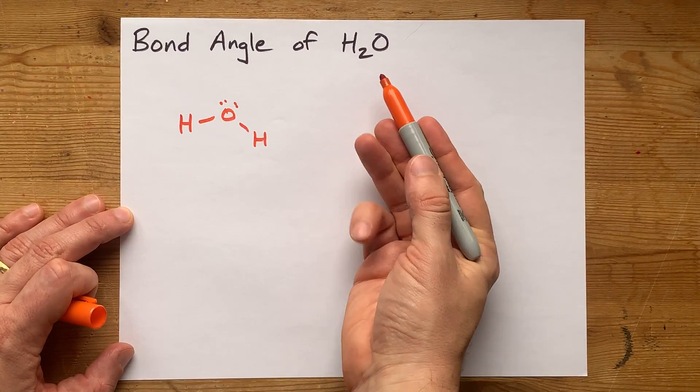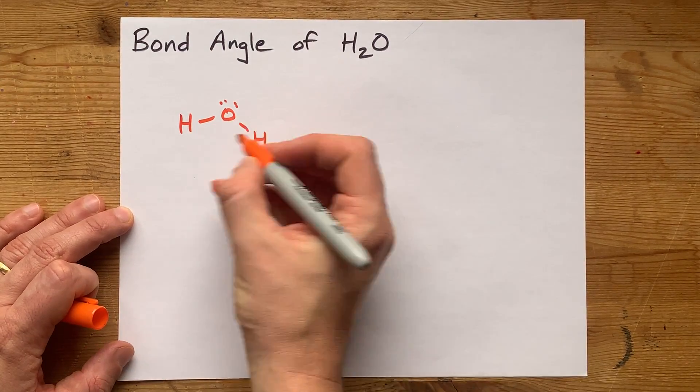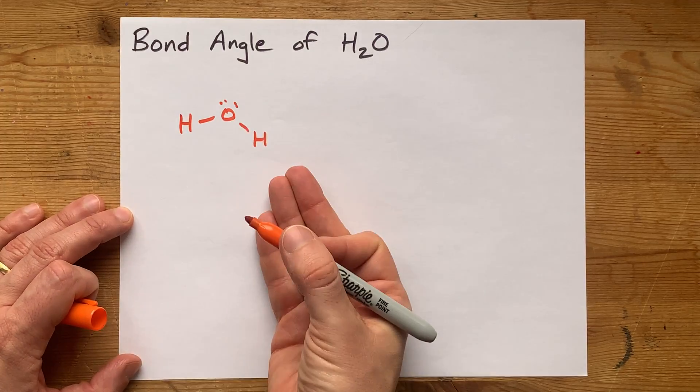What is the bond angle in H2O? First, let's agree that this is the Lewis structure of H2O,